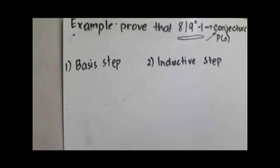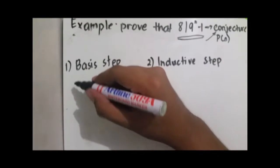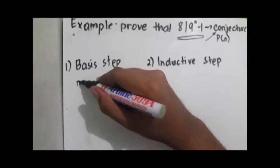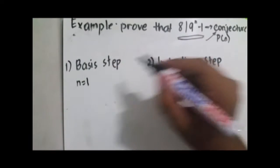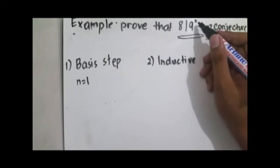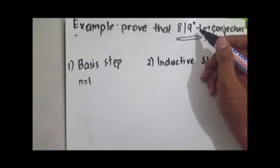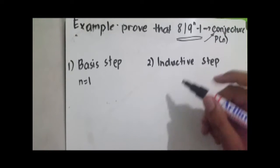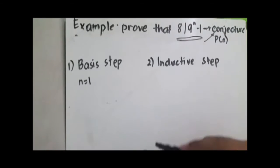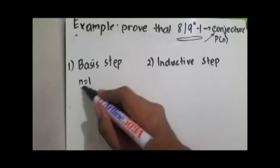To do that, we need to follow the steps in mathematical induction. The first step is the basis step, where we will show that 9^n minus 1 is divisible by 8 when n is equal to 1.